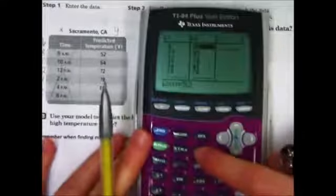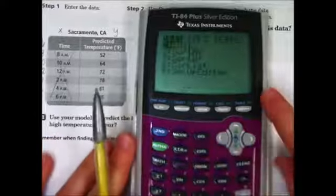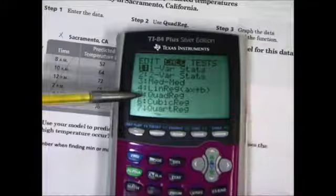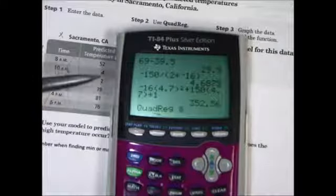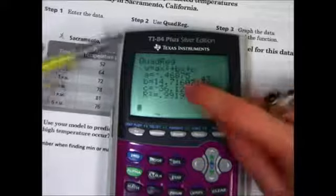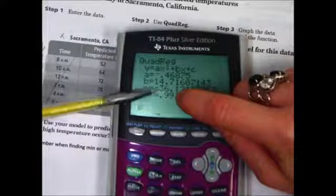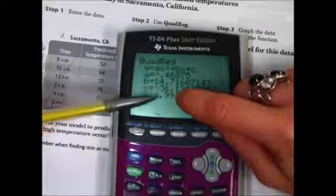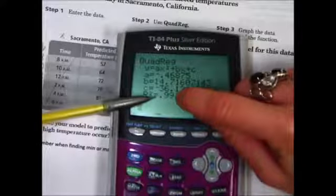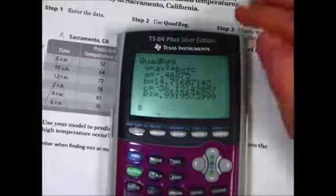Now what we do is we hit stat, just like we did before. We go over to calculate. And we go down to, since it's a parabolic path, we go down to number 5, quadratic, which is a parabola. Hit enter, and we have an a value, a b value, and a c value, and an r squared. And this tells us how accurate is our data. Well, pretty darn accurate, isn't it? That means if you wanted to guess something that you didn't know, you could do that.